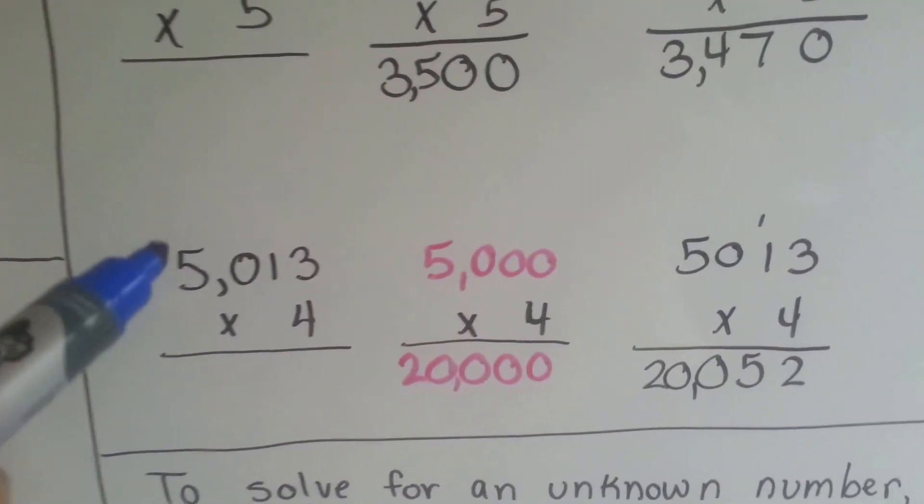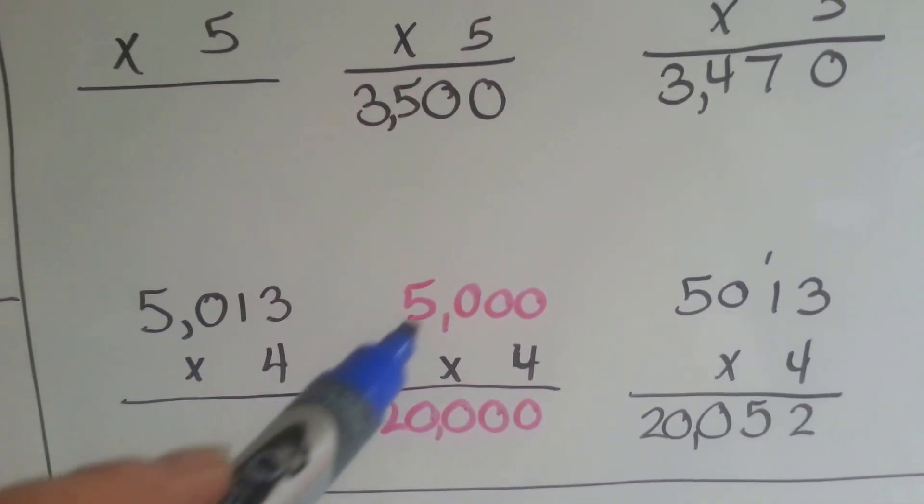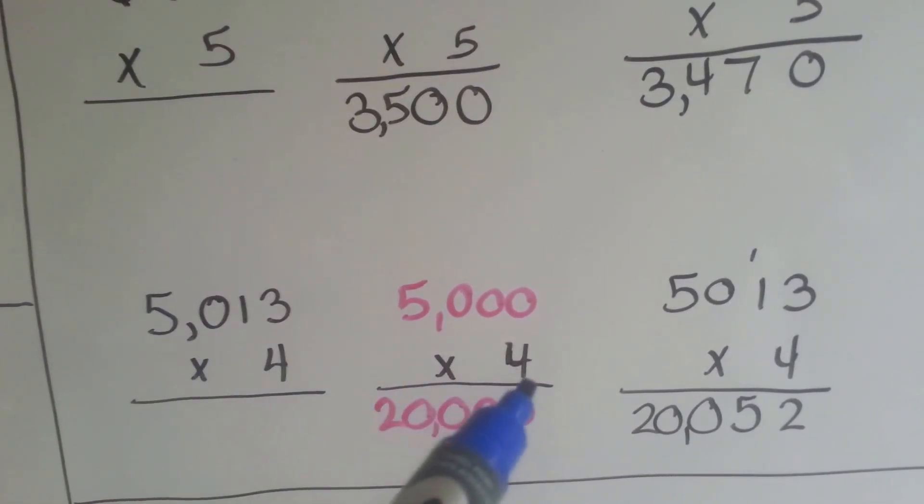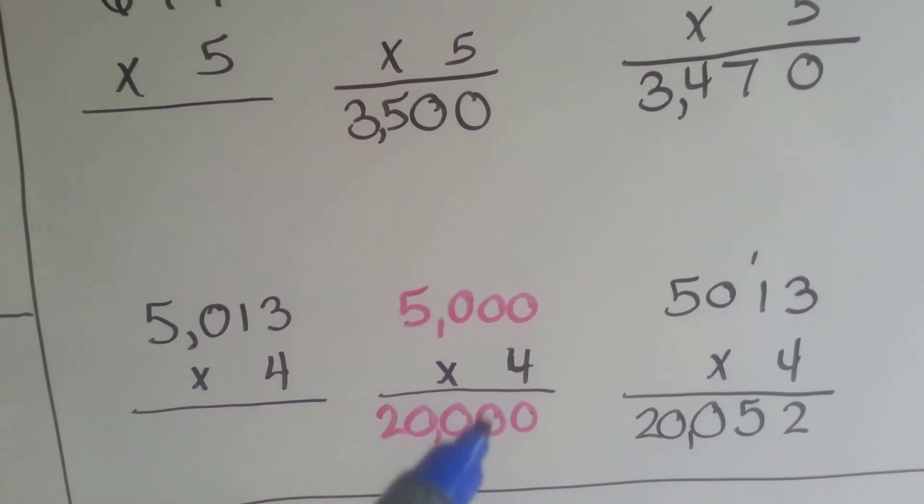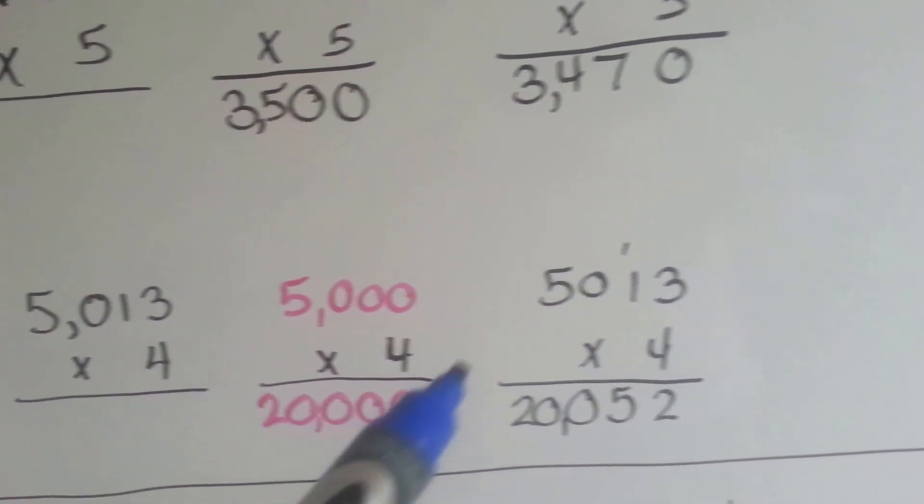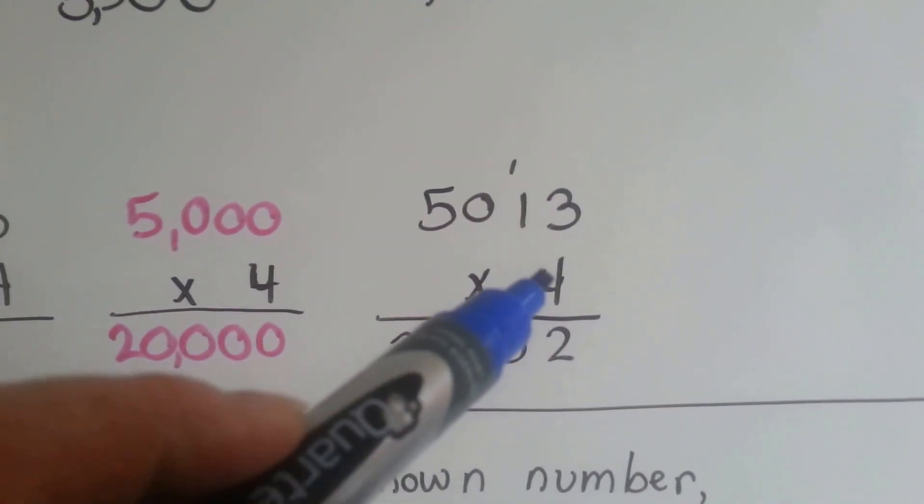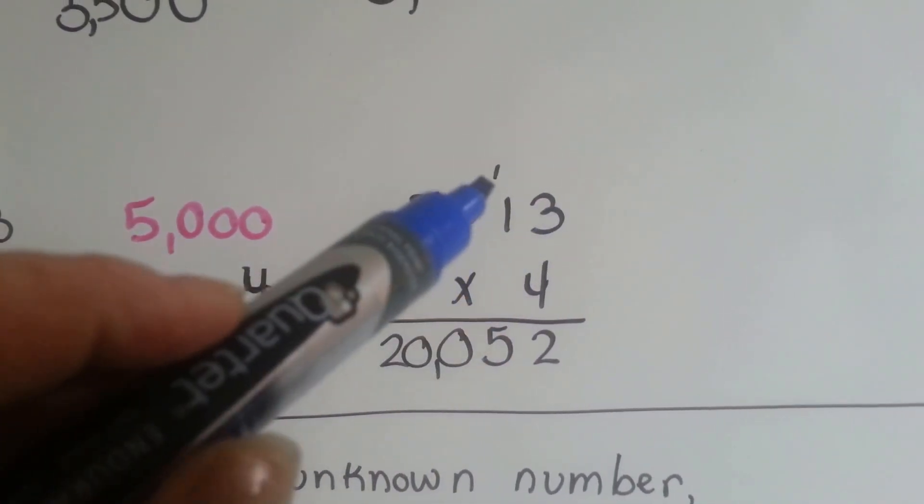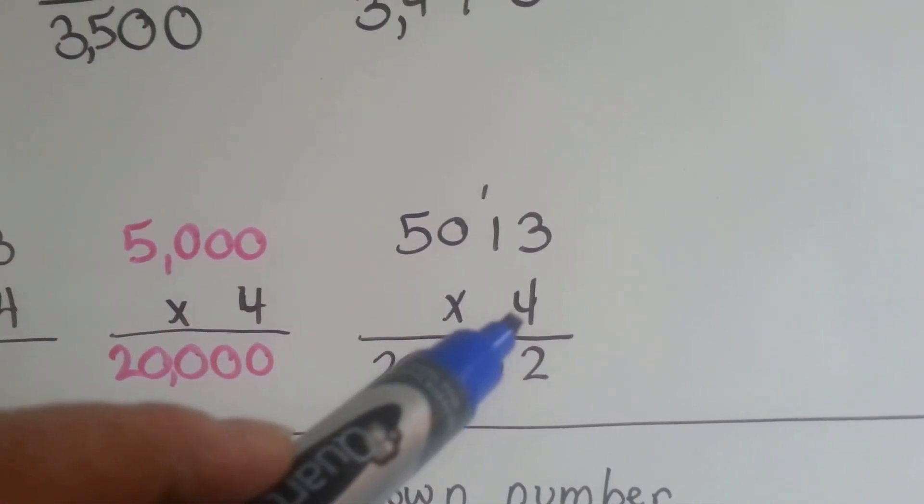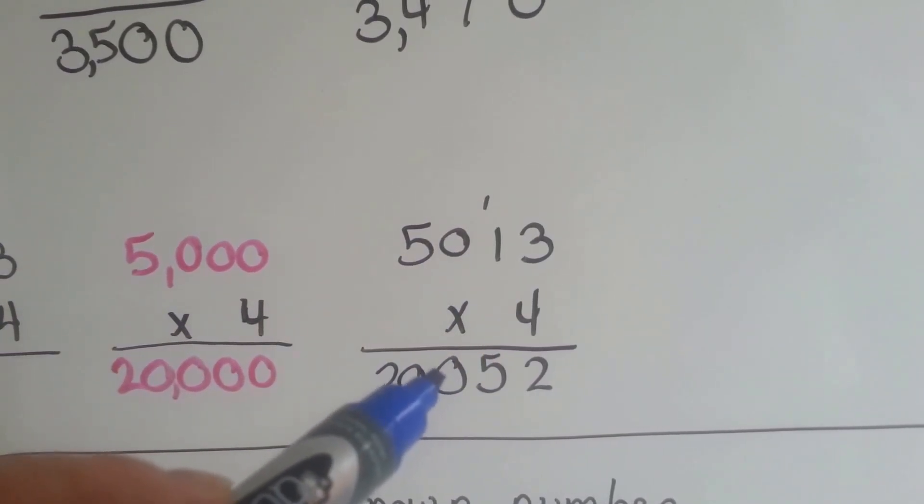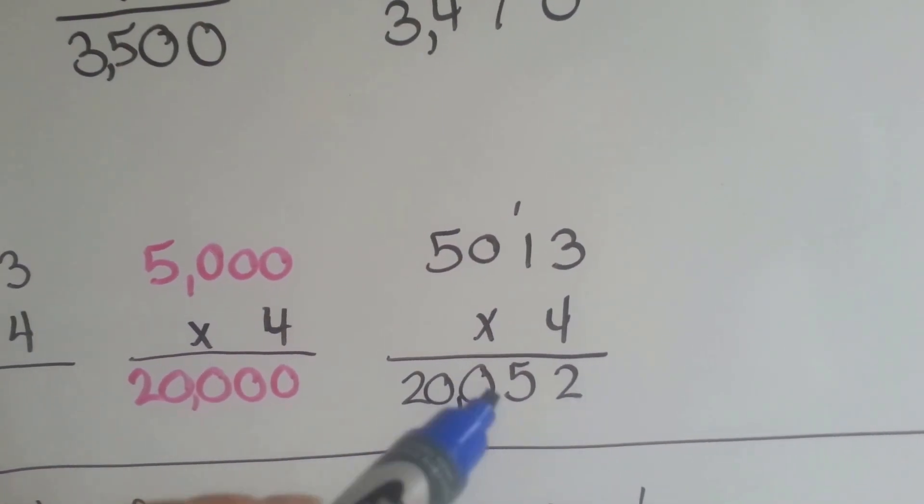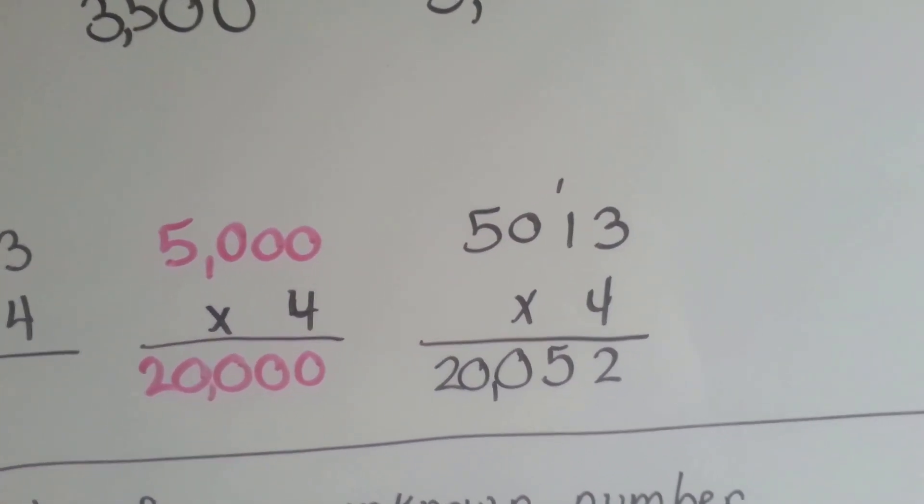Let's do it with thousands. 5,013 would round off to 5,000 even, because the 0 tells the 5 to stay the same. So we've got 4 times 0 is 0, 4 times 0 is 0, 4 times 0 is 0, and 4 times 5 is 20. And then to do it for an exact answer, we start with the 1's. 4 times 3 is 12, we carry over the 1 and put the 2 down. 4 times 1 is 4, plus the 1 is 5. 4 times 0 is 0, so we put the 0, and then 4 times 5 is 20. And we remember our comma after the third numeral. 20,052.